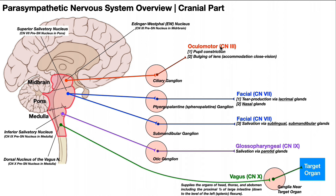Let's start with the oculomotor nerve — cranial nerve three — one of four cranial nerves with parasympathetic function. Those four are oculomotor, facial, glossopharyngeal, and vagus. With the oculomotor nerve, the second neurons have their cell bodies in the midbrain, clustered in what's called the Edinger-Westphal nucleus, sometimes abbreviated EW nucleus. These neurons then synapse with a third set whose cell bodies are located in the ciliary ganglion, which belongs to the oculomotor nerve as part of its parasympathetic function.